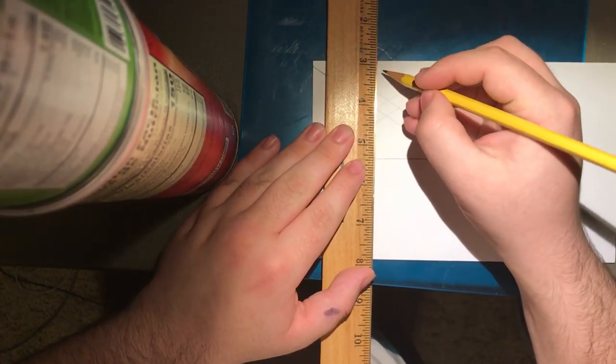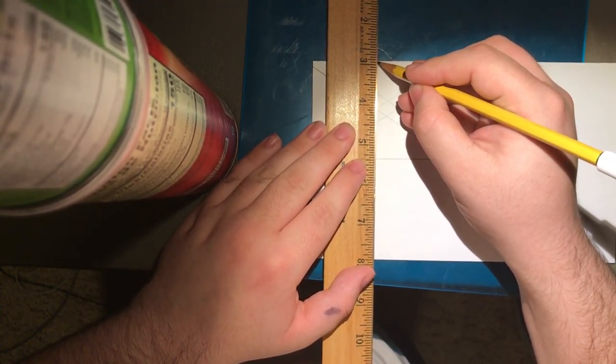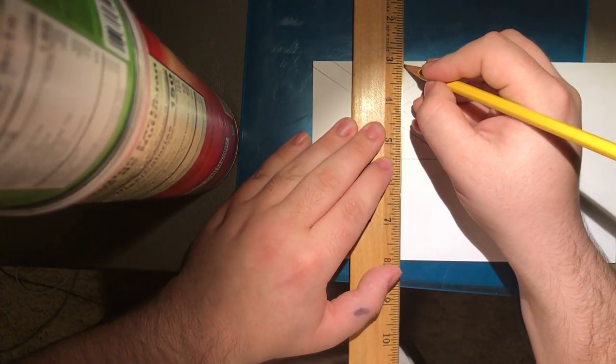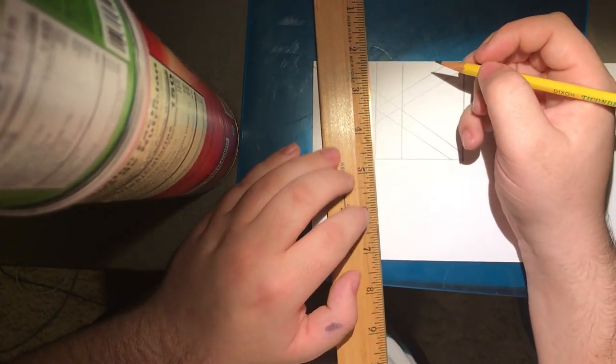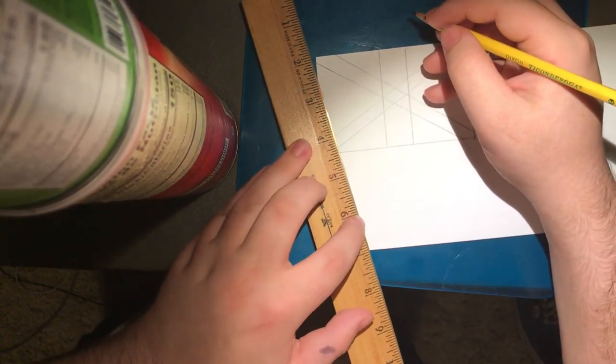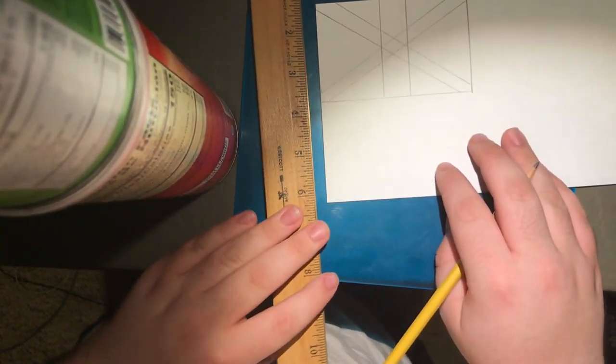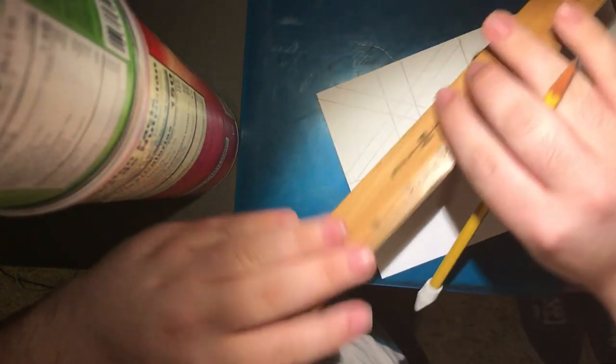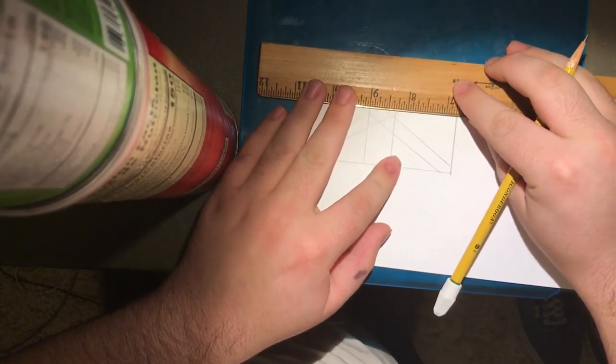Now I'm going on to the plus. Then I'm going to make an inner triangle. Wait, I forgot to do the plus completely. Okay, good thing I realized that.